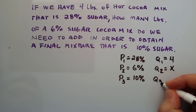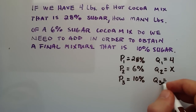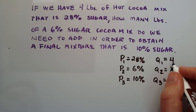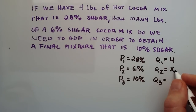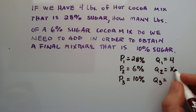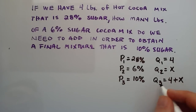Q3 will be the quantity of the end result. We don't know how much we'll have in the end, but we can define it. We know how much of the first mixture we have, and we know how much of the second mixture we have. If we add the first mixture to the second, we get an end result that is the sum of the two quantities. We're using 4 pounds of the first and X pounds of the second, so Q3 simply becomes 4 plus X.